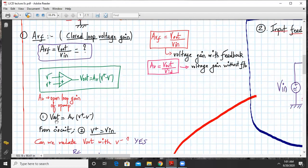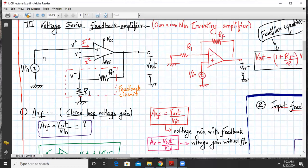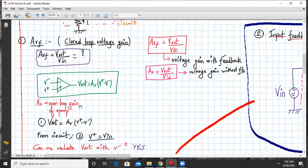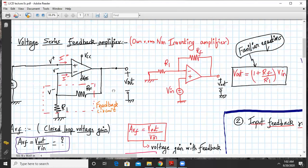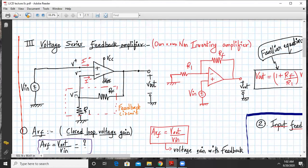Our very first step: Vout equals AV times V plus minus V minus, we have already seen before for the open loop amp. Now from circuit number two, what can we say about V plus? As you can see clearly, V plus is connected to Vin. Hence we write V plus equals Vin. Next, can we relate Vout in terms of V minus? Yes.